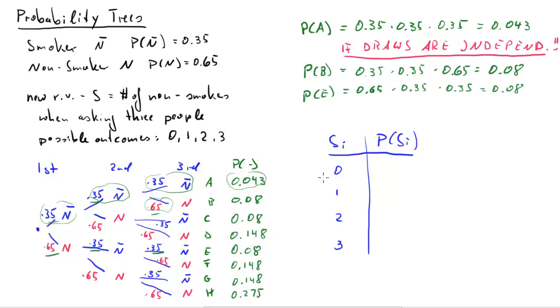Let's create the probability table for this new random variable S with outcomes 0 to 3. So 0, only one of these eight branches gives us an outcome of 0 non-smokers. So 0 non-smokers.